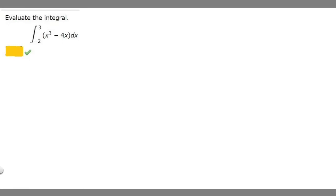So in this problem we're told to evaluate the integral from minus 2 to 3 of the function x cubed minus 4x times dx. The first thing I'm going to do is rewrite our integral, so minus 2 to 3 of x cubed minus 4x times dx.